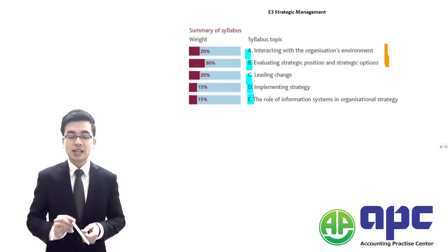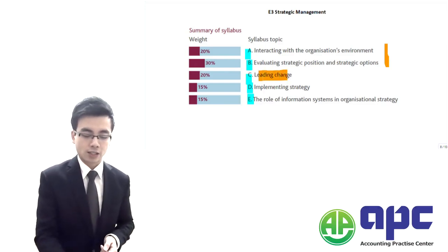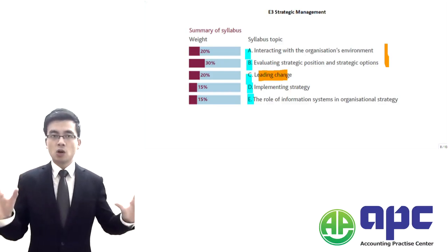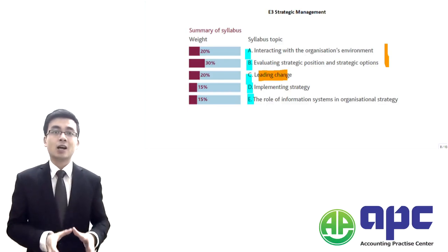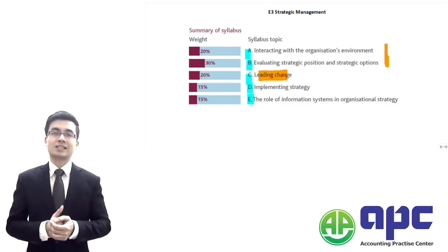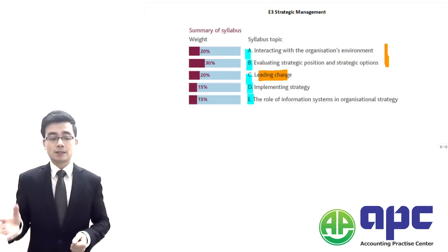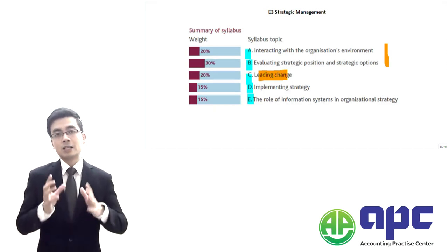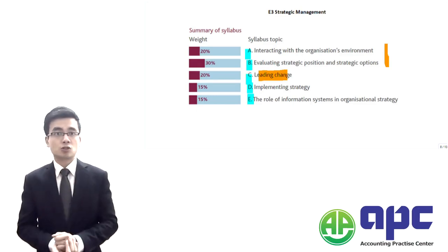Section C of the CIMA E3 exam focuses on leading change — it's about change management. The knowledge in section C will be the same as what you've seen in your E1 or E2 exam. From my perspective, change management in section C of the E3 exam is mainly testing you on operational strategy.